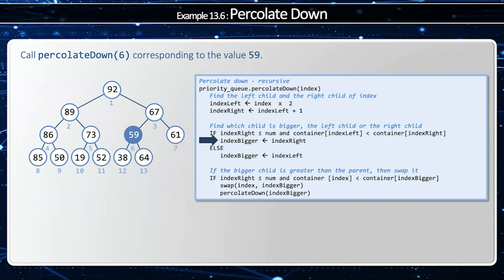Now, which one's bigger? Well, index right is bigger, because 64 is bigger than 38, which is also bigger than my main index. So now I can go into my swap, and I'm going to swap 64 and 59.